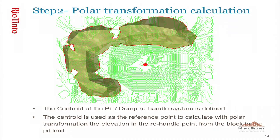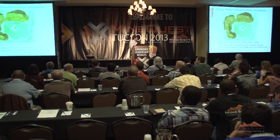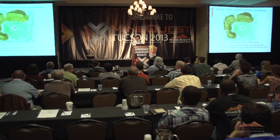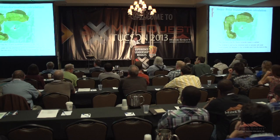The next step is the polar transformation calculation. Previous to our Excel spreadsheet model, we define the centroid of our system — we know the centroid of the pit, we know where the dump is, and we define the centroid of the whole system. This centroid will be used as a reference point to calculate the polar transformations in our spreadsheet. For this study, we use a fixed crest elevation — the elevation of the dump is fixed at the crest.